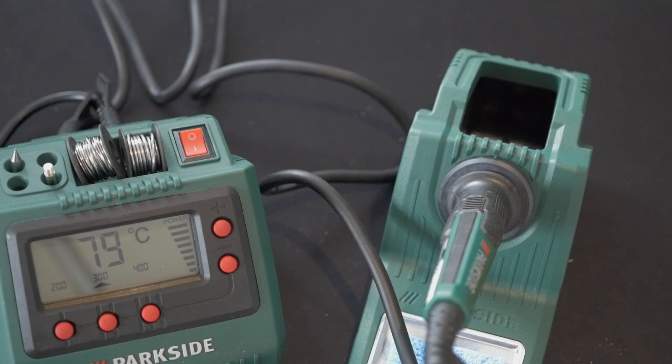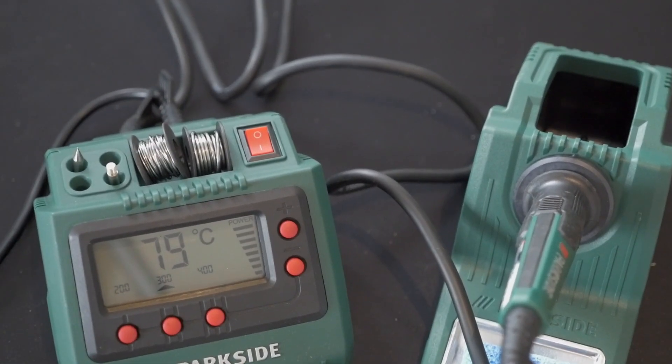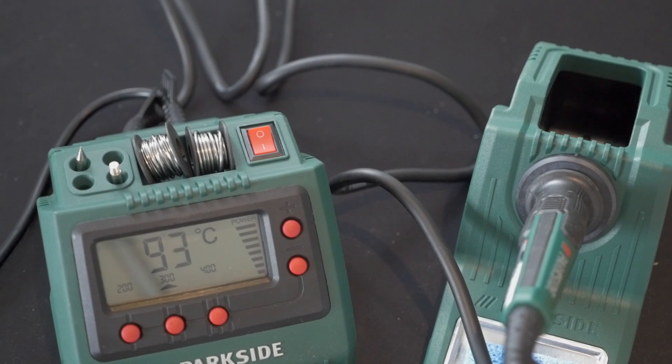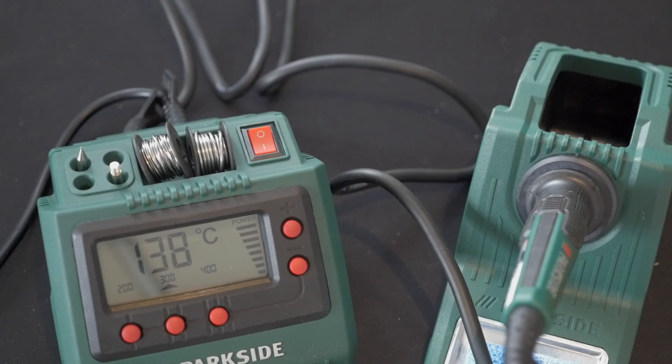So, presumably, that's going to get hotter and hotter. 70 degrees C, 83. Yeah, there we go. There it is rising. So, it's obviously now getting hotter and hotter. That soldering tip is now going to get hotter and hotter.